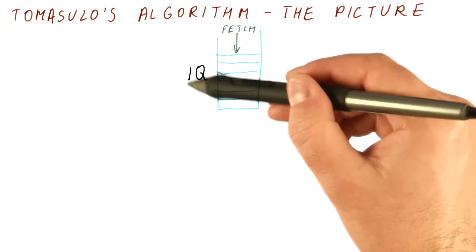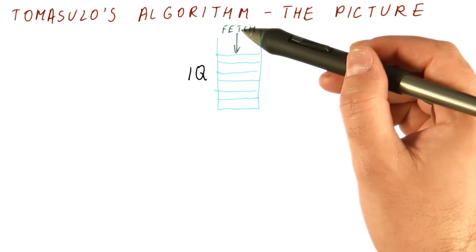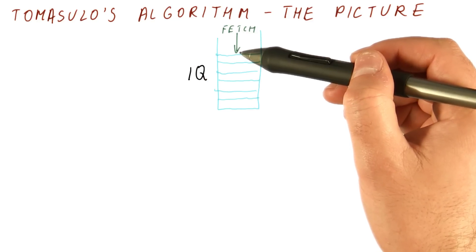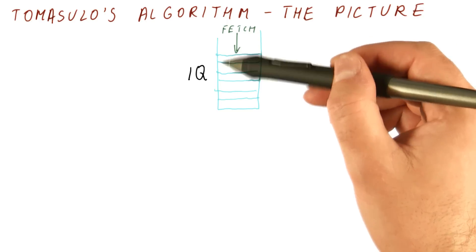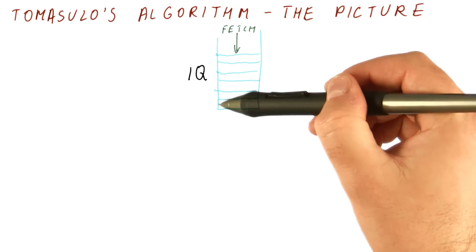First, there is an instruction queue, which I labeled here IQ. Instructions come from the fetch unit in the order in which they were fetched. And again, these are only floating point instructions, and then they're queued up here.